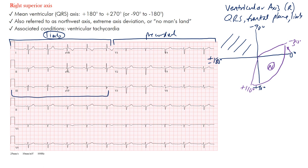Right axis deviation occupies this quadrant. If you're just beginning, you can consider that whole region right axis deviation. Up here is left axis deviation — again, if you're just beginning, consider that whole region left axis deviation. More specifically, some of that leftward region can actually be normal in adult patients as they get older.